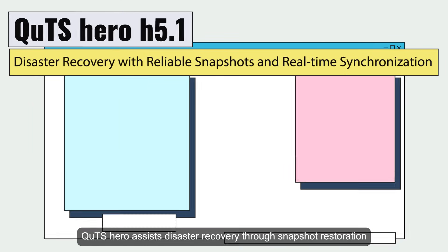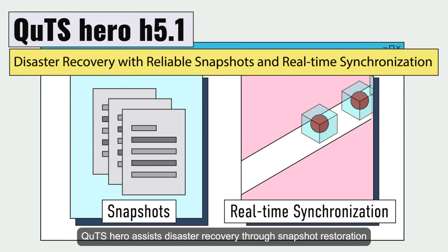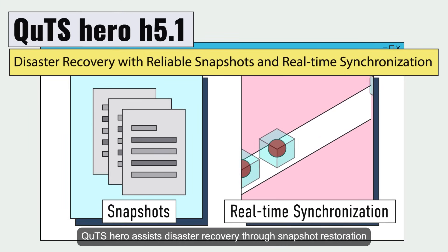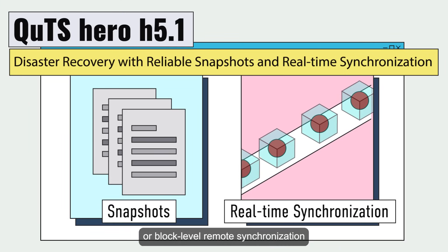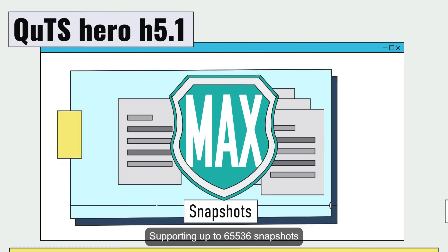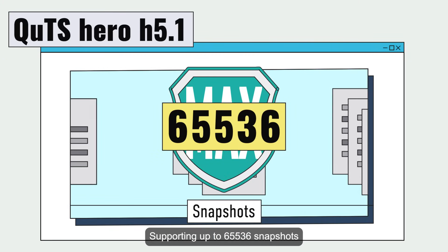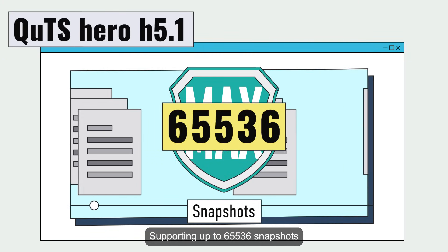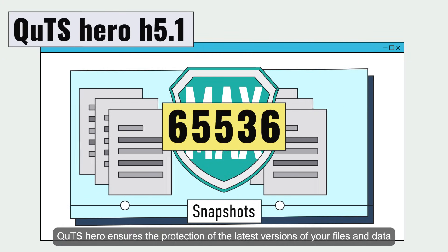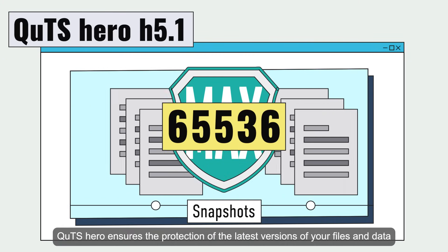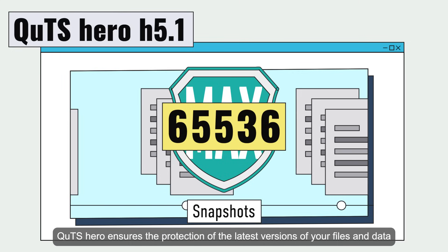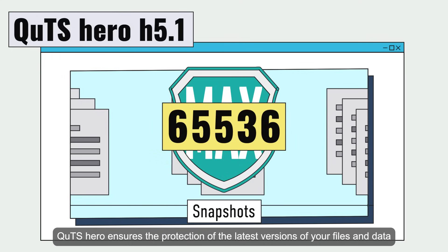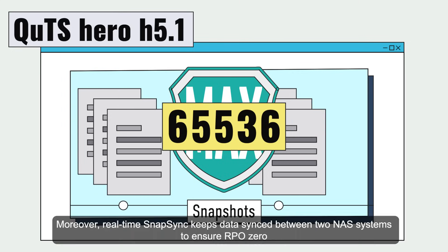QTS Hero assists disaster recovery through snapshot restoration or block-level remote synchronization, supporting up to 65,536 snapshots, ensuring the protection of the latest versions of your files and data.